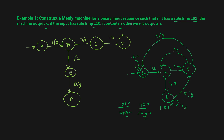Let's verify with input 1,1,0,1. You are in state a, get 1, go to state b with output z. Get 1, go to state e with output z. Get 0, go to state c with output y — so once you encounter 1,1,0 you get y. Then you get 1, go to state b with output x — so you also encounter substring 1,0,1 and get x. This confirms: substring 1,0,1 gives output x; substring 1,1,0 gives output y; any other condition gives output z.